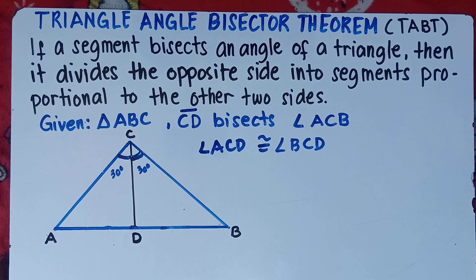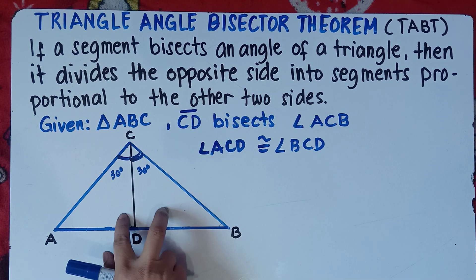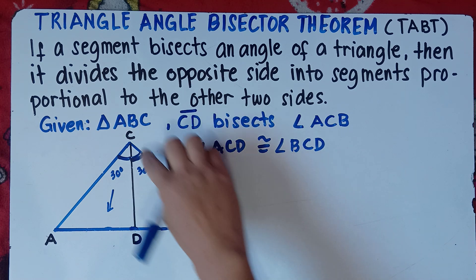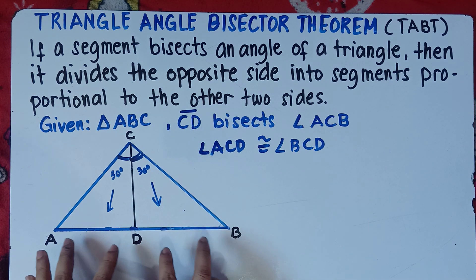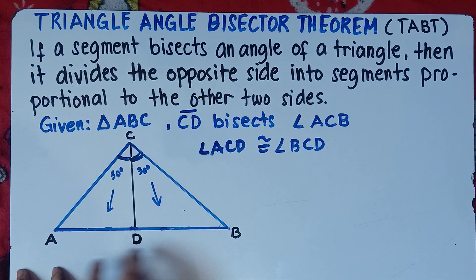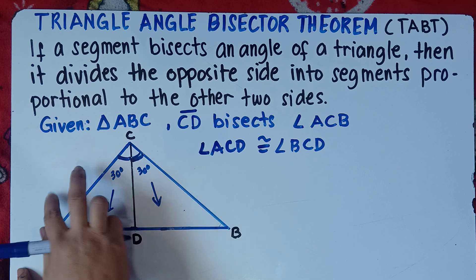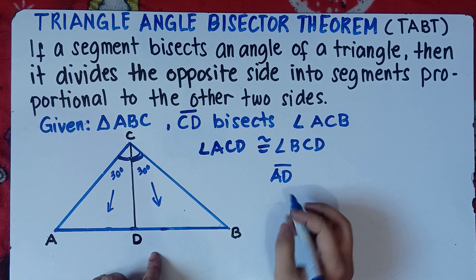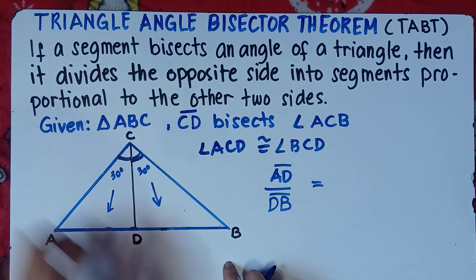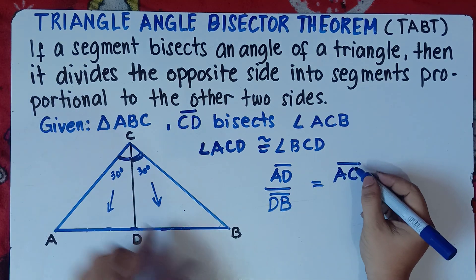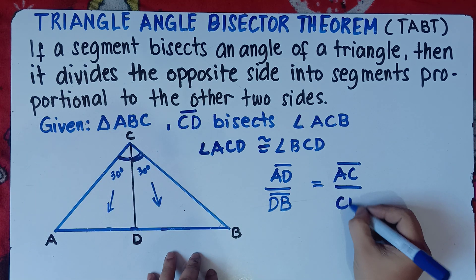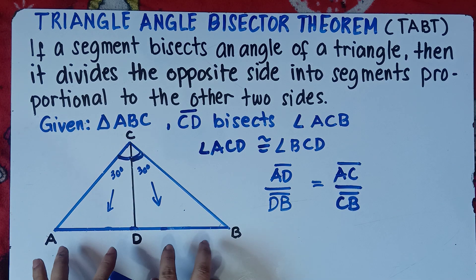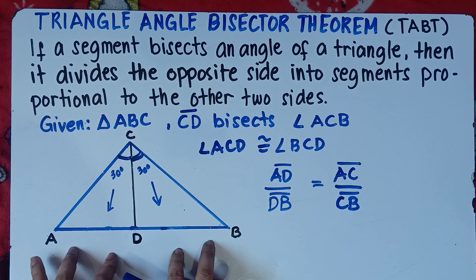According to the theorem, the opposite side is proportional to the other two sides. The opposite side of angle ACD is AD, and the opposite side of angle BCD is DB. So the ratio AD over DB is equal to AC over CB. The ratio of these two opposite sides equals the ratio of the other two sides.